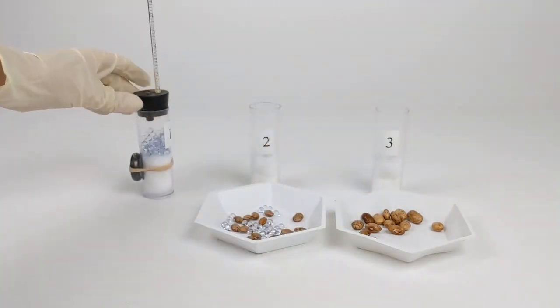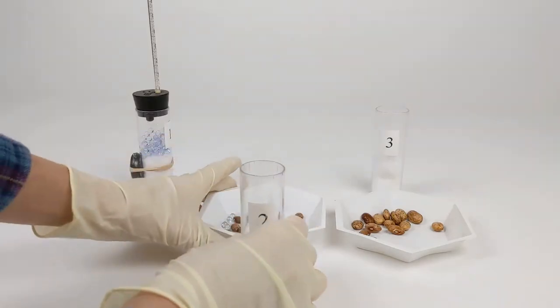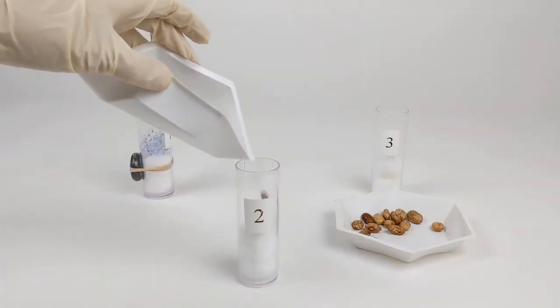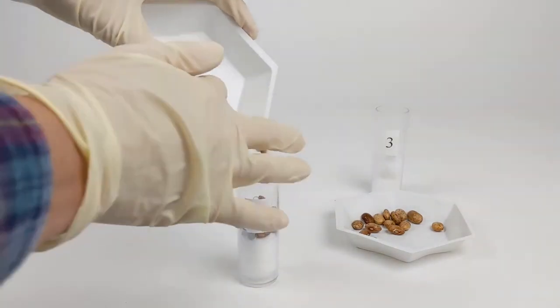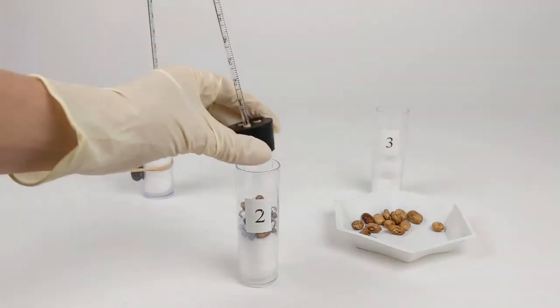Now we repeat this process with vials 2 and 3. Vial 2 has non-germinating beans and glass beads, and vial 3 has the germinating beans.